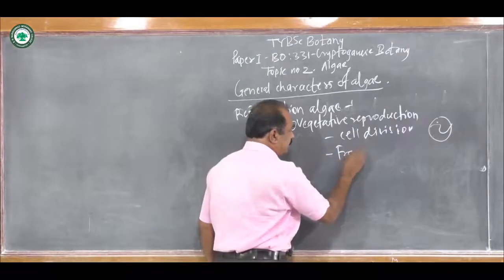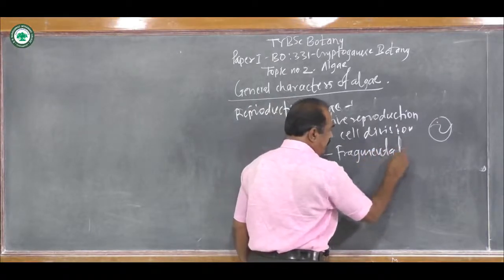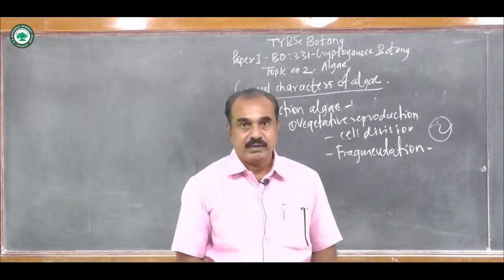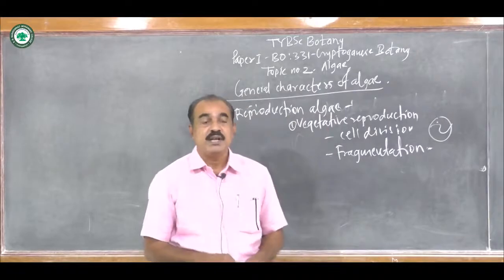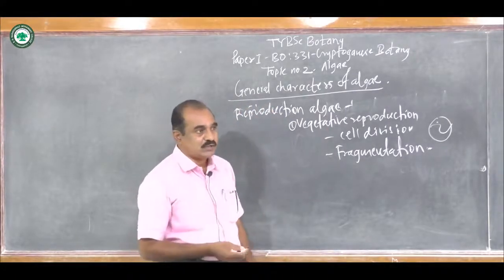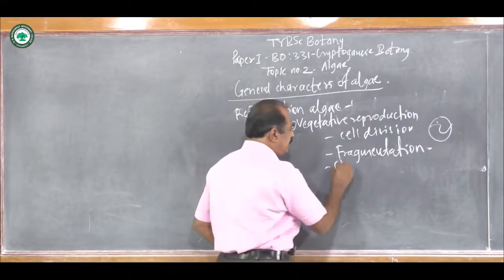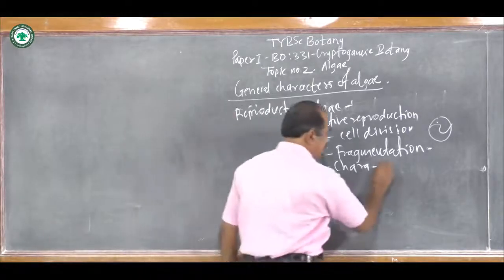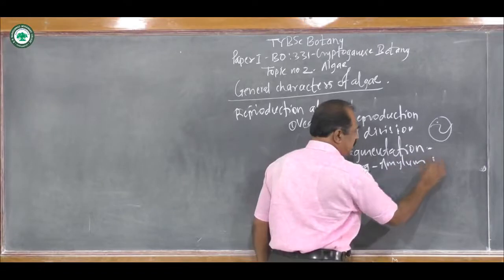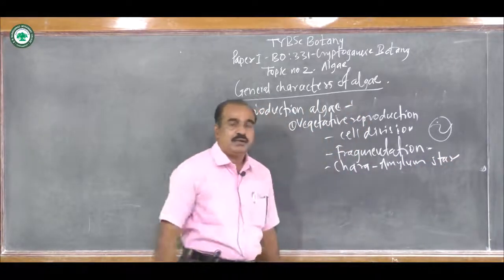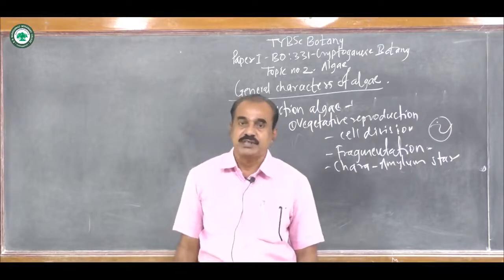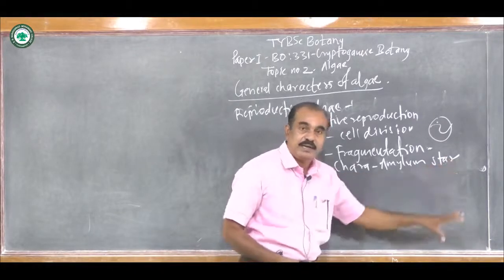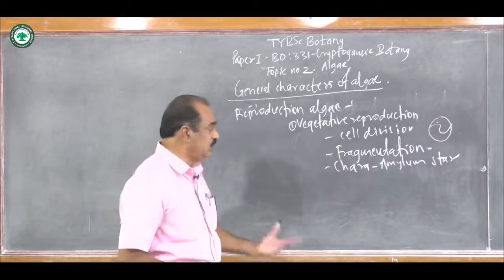Second is Fragmentation. Such type of Vegetative Reproduction is found in the Filamentous Algae. Here the filament breaks into a number of fragments, and each fragment has the capacity to develop into a new thallus of the Alga. For example, in the Chara plant, there are special structures called Amylum stars. These are special vegetative reproductive bodies, full of starch, and their shape is like a star. When they get detached from the parent plant, they have the capacity to develop into a new thallus of Chara.